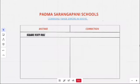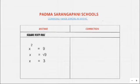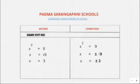The next math error is the square root rule. Take the expression x squared equals 9. You will write x equals root 9, so x equals 3 — but that is not correct. According to the rule, x equals plus or minus root 9, and therefore x equals plus or minus 3.